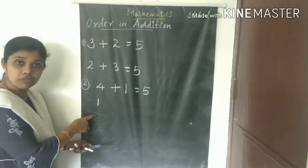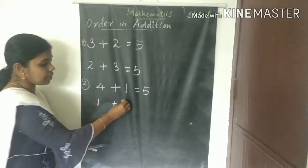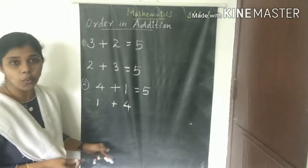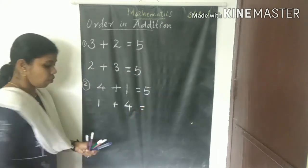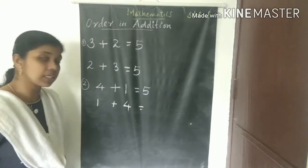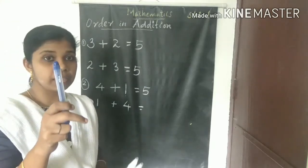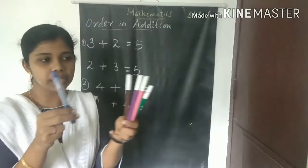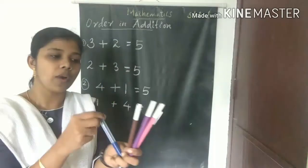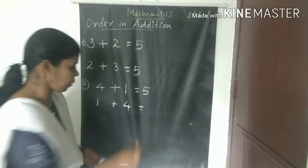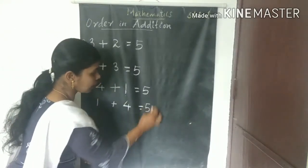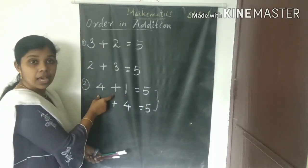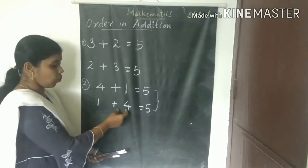Next, interchanging the numbers — the second number is written in the first place and the first number in the second place. That means we are changing the order of the numbers. So one plus four: my right hand has one pen and my left hand has four pens. Total: one, two, three, four, five — answer is five. The answer is the same.